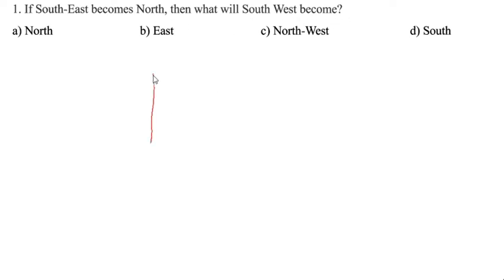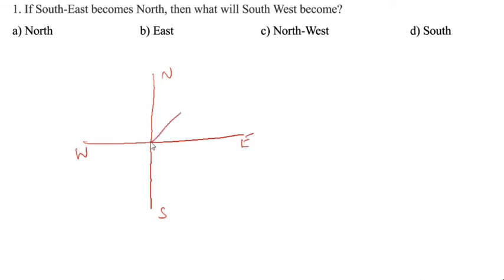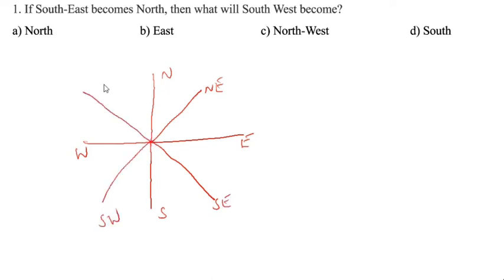We'll draw the direction details: North, South, West, East. Then the diagonals: North-East, South-East, South-West, North-West.